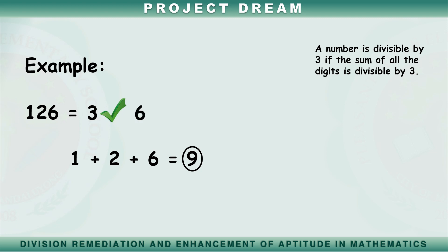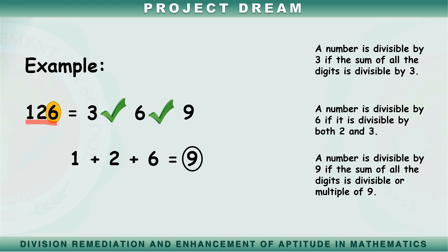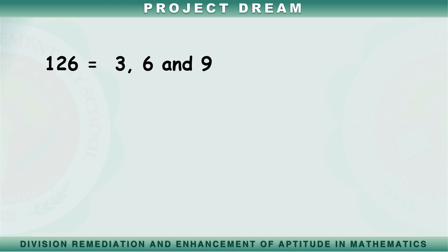Is 6 a factor of 126? Using the divisibility rule for 6: 126 is divisible by 2 because the 1's digit 6 is an even number, and 126 is also divisible by 3. So 126 is divisible by 6, and 6 is a factor of 126. Is 9 a factor of 126? Using the divisibility rule for 9: the sum of the digits is 9, and 9 is divisible by 9, so 9 is a factor of 126. Therefore, 3, 6, and 9 are all factors of 126. Now let's check 144.